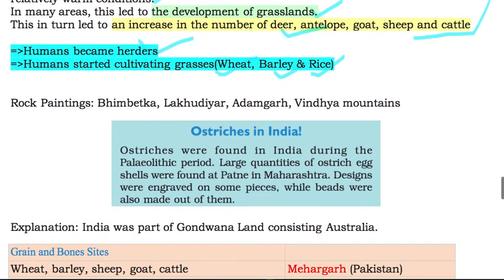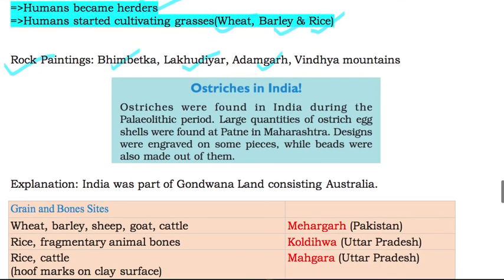Some important rock paintings are found at Bhimbetka, Lakhudia in Uttarakhand, Adamgarh near the Narmada River, and the Vindhya Mountains. A notable point from NCERT is that ostriches were found in India during the Paleolithic period — large quantities of ostrich eggshell were found at Patne in Maharashtra, with designs engraved on some pieces and beads made from them. Since ostriches are now found in Australia, a possible explanation is that India was once part of Gondwana Land, when Australia was adjacent.